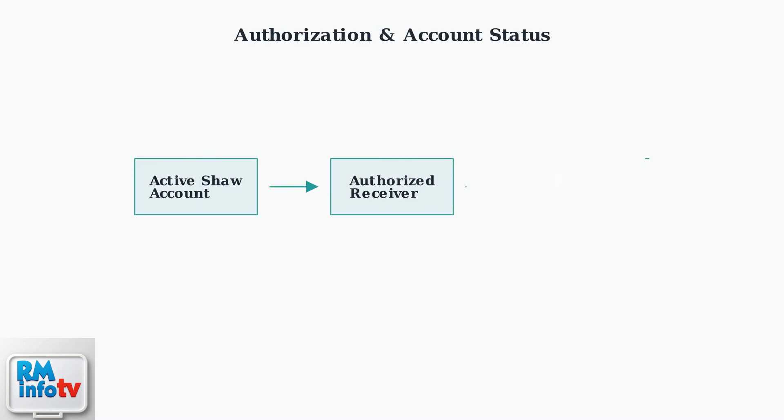Now let's address authorization issues. Even with perfect signal strength, your receiver won't work without proper authorization from SHA-DIRECT. Authorization means your account is active and your specific receiver is registered with SHA-DIRECT. Without this, channels won't display even with perfect signal strength.